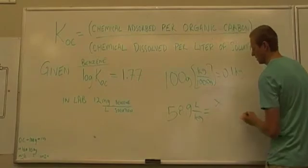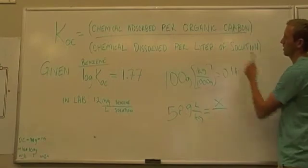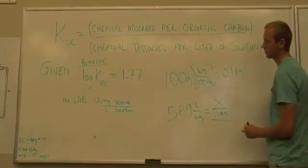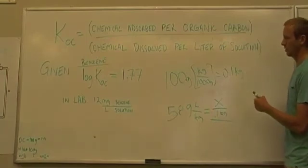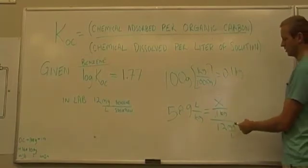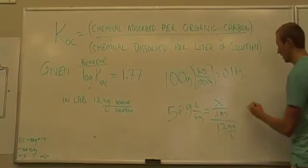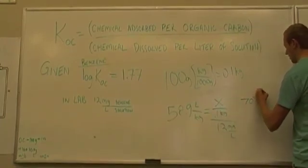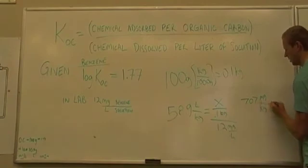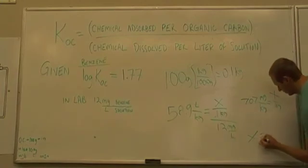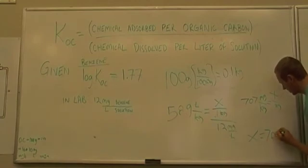So I would represent this X over the amount of organic carbon, so 0.1 kilograms. All over, the chemical dissolved per liter of solution, and that was 12 milligrams per liter. So now trying to solve in the equation, 12 times 58.9 equals 707. And then the liters cancel out, and you're left with milligrams per kilogram equals X over 0.1 kilograms. And finally multiplying that 0.1 kilograms by 707 milligrams per kilogram gives you 70.7 milligrams.